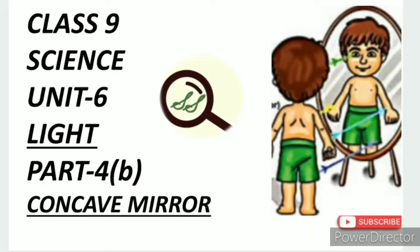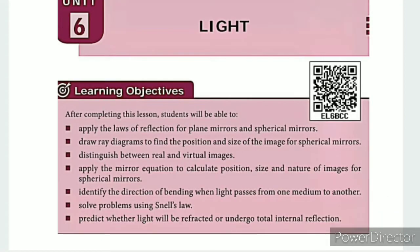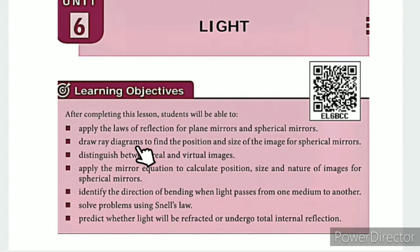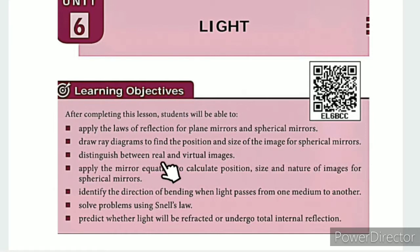Greetings from SS Class 9 Science Unit 6 Light Part 4B: Concave Mirror. The learning objectives are: apply the laws of reflection for plane mirrors and spherical mirrors, draw ray diagrams to find the position and size of the image for spherical mirrors, and distinguish between real and virtual images.